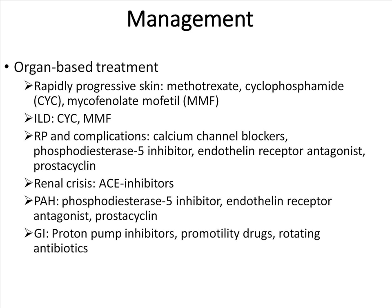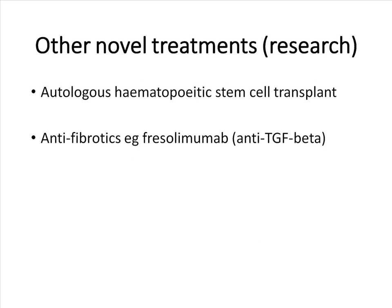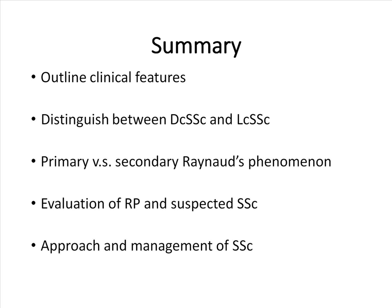Nutritional support is also very important. Other novel treatments currently under research include autologous hematopoietic stem cell transplant and antifibrotics such as fresolimumab, which is an anti-TGF-beta. In summary, the clinical features of systemic sclerosis have been outlined, the diffuse and limited cutaneous systemic sclerosis subsets distinguished, the differences between primary and secondary Raynaud's phenomenon described, along with the evaluation of Raynaud's phenomenon and suspected systemic sclerosis, and the approach and management of systemic sclerosis.